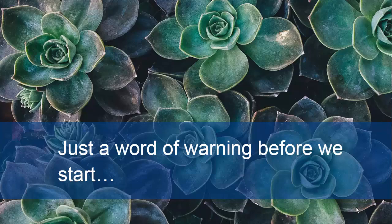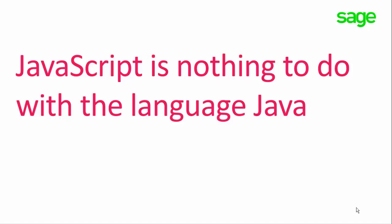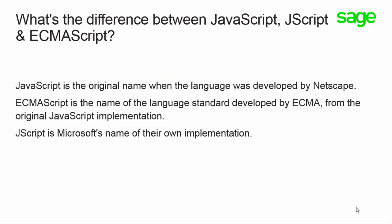A word of warning before we start: JavaScript has nothing to do with the language Java. You may hear the names JavaScript, JScript, and sometimes ECMAScript being used. JavaScript is the original name of the language, first developed by Netscape. ECMAScript is the name of the language standard developed by ECMA — the European Computer Manufacturers Association — from the original JavaScript implementation; it is the official standard for the language. JScript was Microsoft's name for their own implementation. Although there are some syntax differences between local flavors of JavaScript, these are not important enough to make a distinction here.